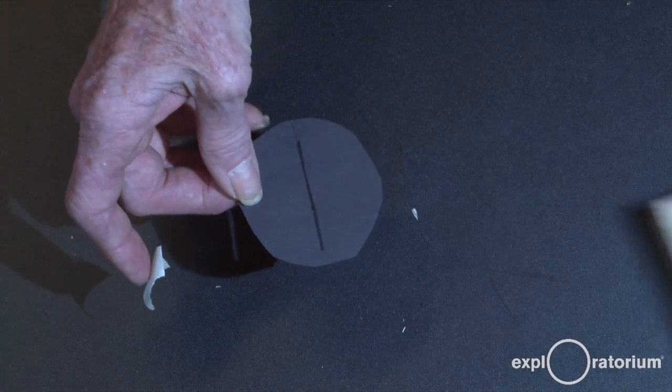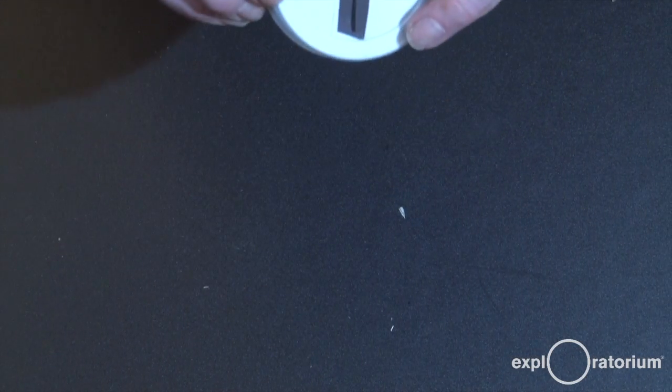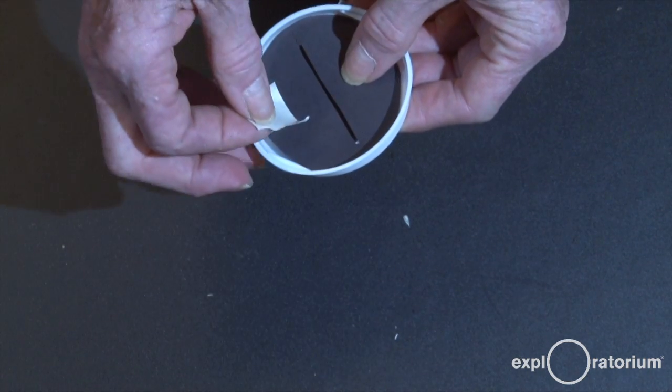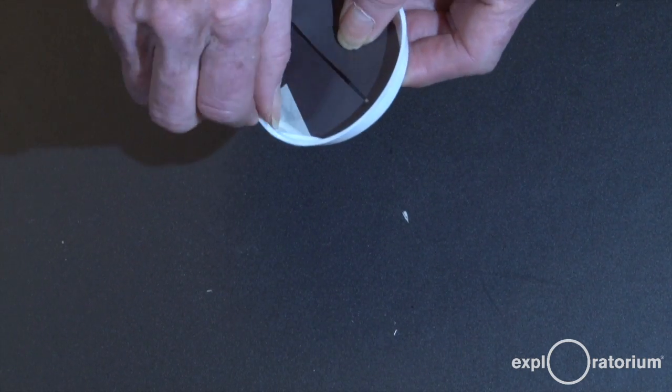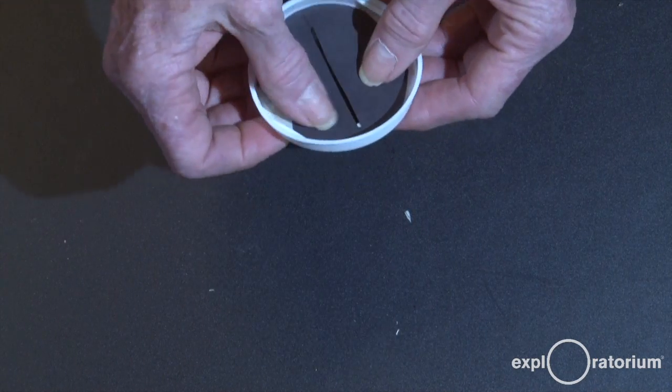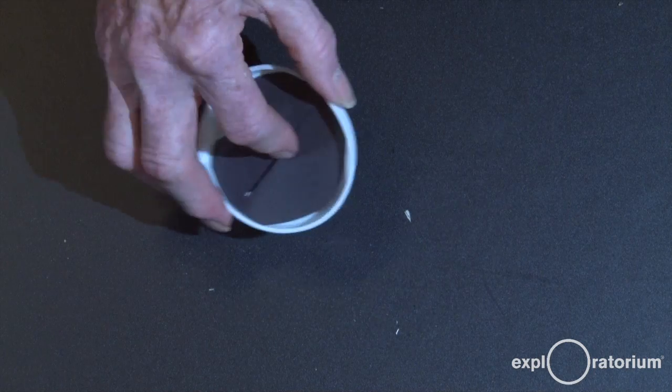So we'll take our piece of paper with the slit and we'll line it right up with the slot. So the middle of the slit's in the middle of the slot. I'll put a piece of tape off to the side to keep it from rotating. So now it will maintain its alignment. And then I will take it and put it into my tube.